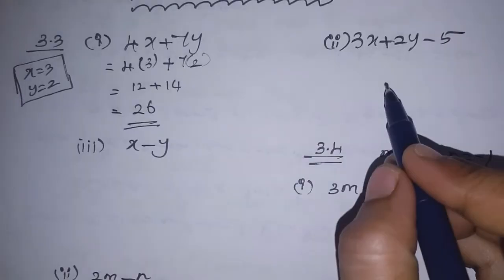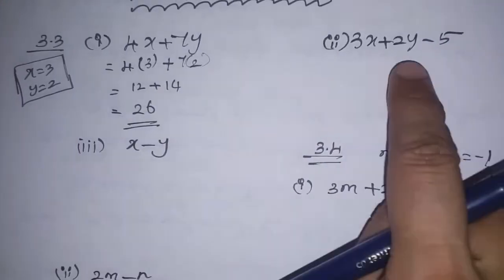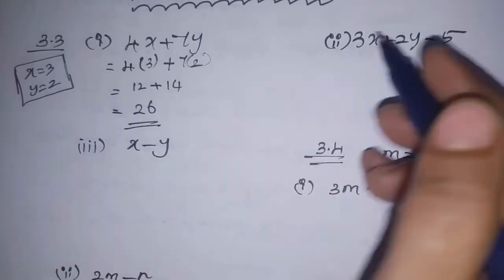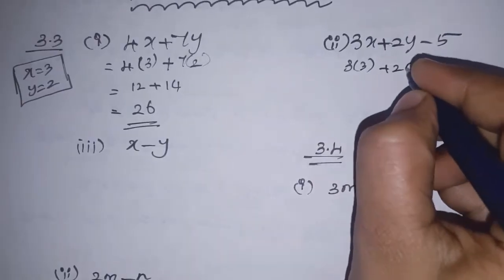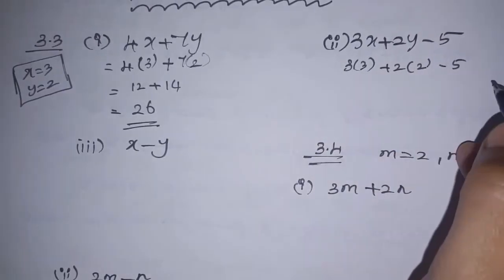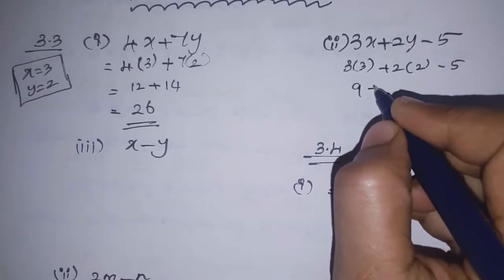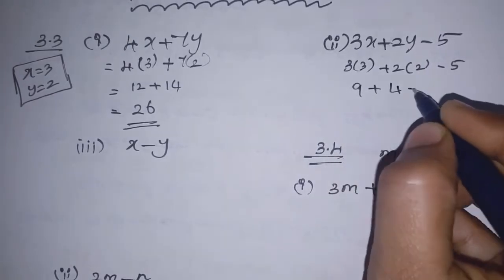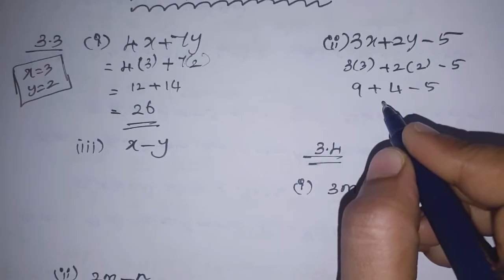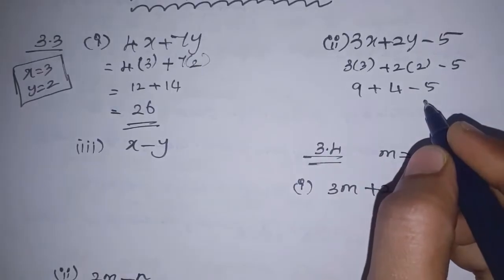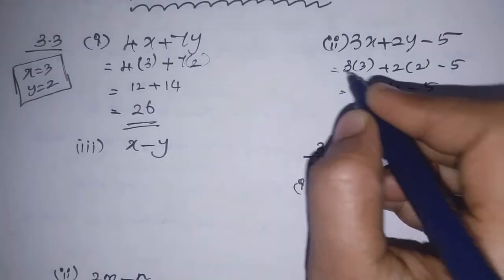Next is 3x plus 2y minus 5. Substituting x equals 3 and y equals 2: 3 into 3 is 9, and 2 into 2 is 4, minus 5. So 9 plus 4 is 13, and 13 minus 5 is 8. The answer is 8.